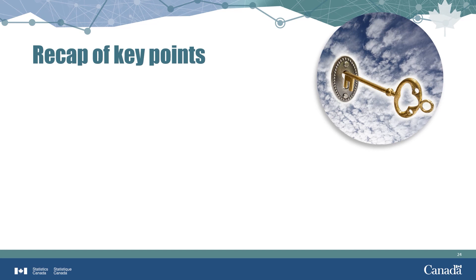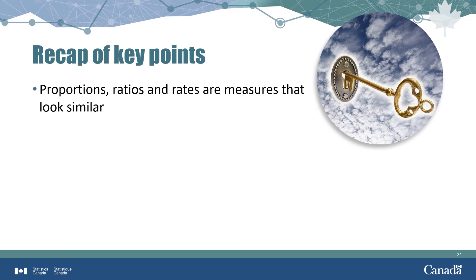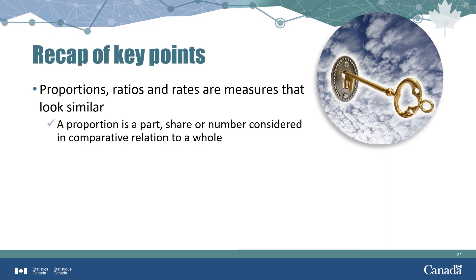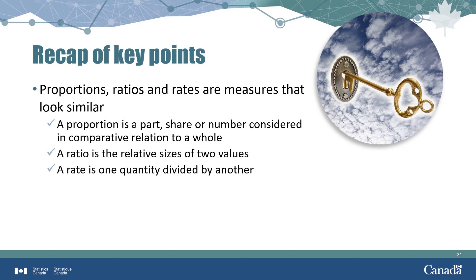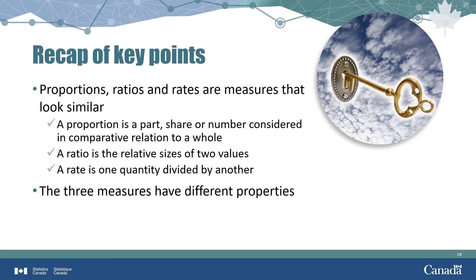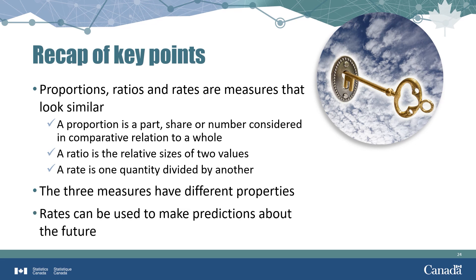Let's recap the key points. Proportions, ratios, and rates are all useful for comparing numbers and can appear quite similar. However, a proportion is a part in comparative relation to a whole, a ratio is the relative size of two values, and a rate is one quantity divided by another. All three measures have different properties. It is also interesting to note that rates, such as the growth rate, can be used in making predictions about the future.